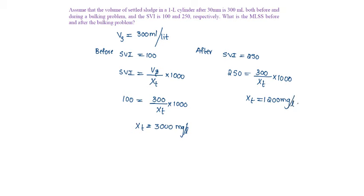There is an escape in MLSS concentration: 3000 - 1200 = 1800 mg per liter of MLSS escaped during bulking.